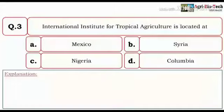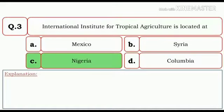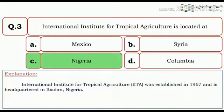International Institute for Tropical Agriculture is located at Mexico, Syria, Nigeria, and Colombia. So here the correct answer is Nigeria. The International Institute for Tropical Agriculture, i.e. IITA, was established in 1967 and is headquartered in Nigeria.